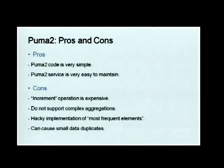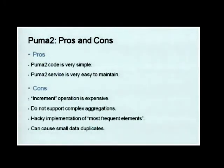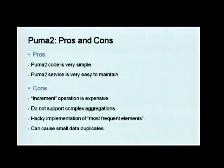When complex aggregation was needed — specifically the most frequent items, like the most frequent URLs in our system — we implemented it in a hacky way. We have multiple tables in HBase: one table for items viewed more than 10 times, one for 100 times, one for 1,000 times, and we migrate items one by one whenever they cross a boundary. That's a pretty hacky solution.